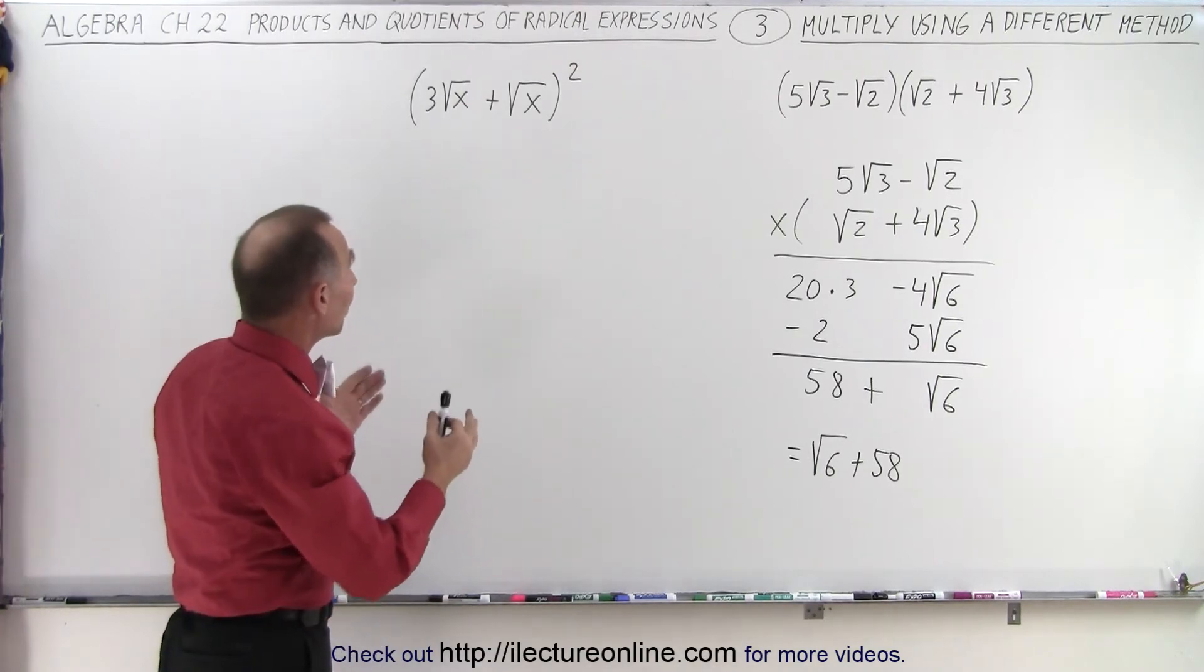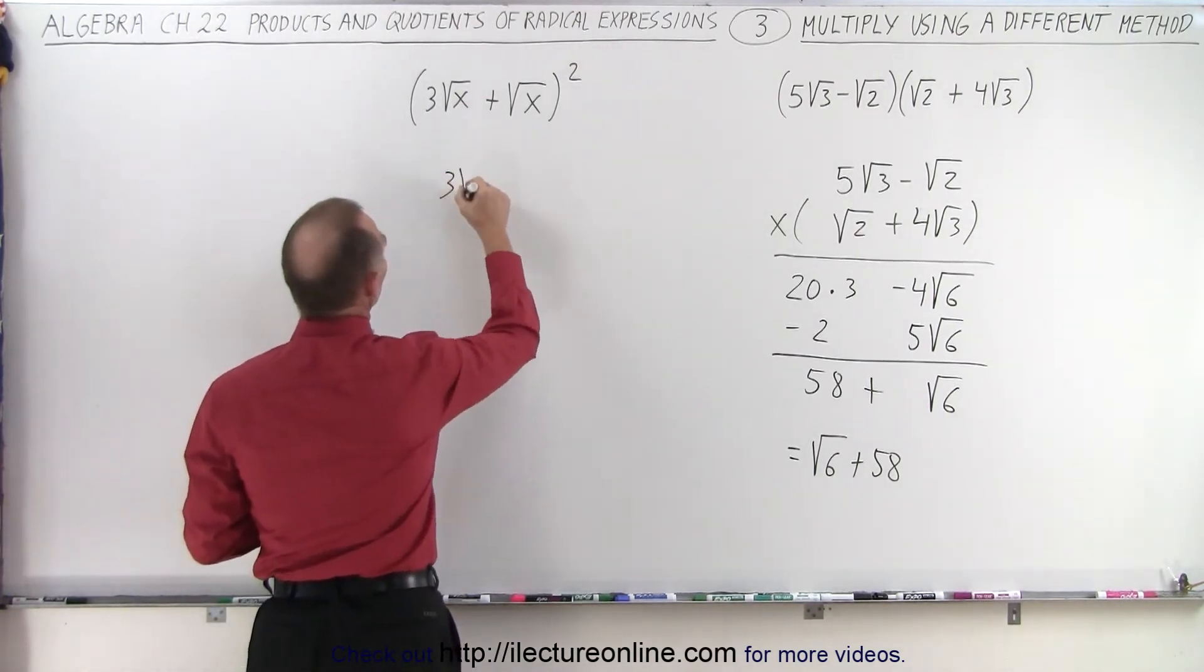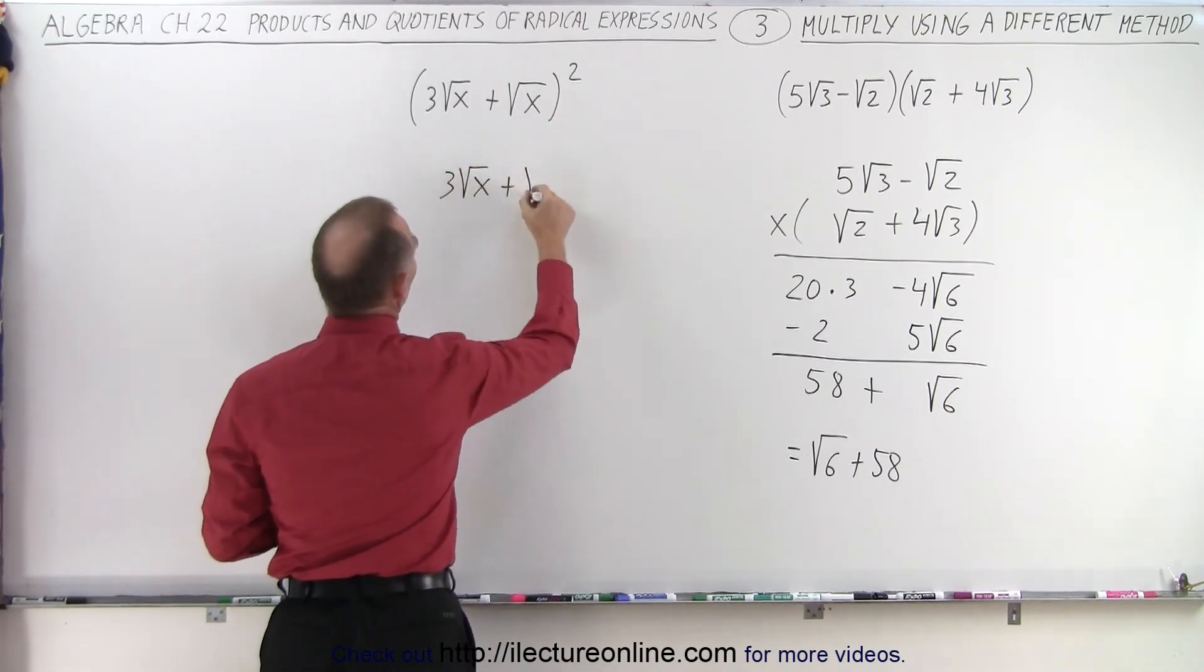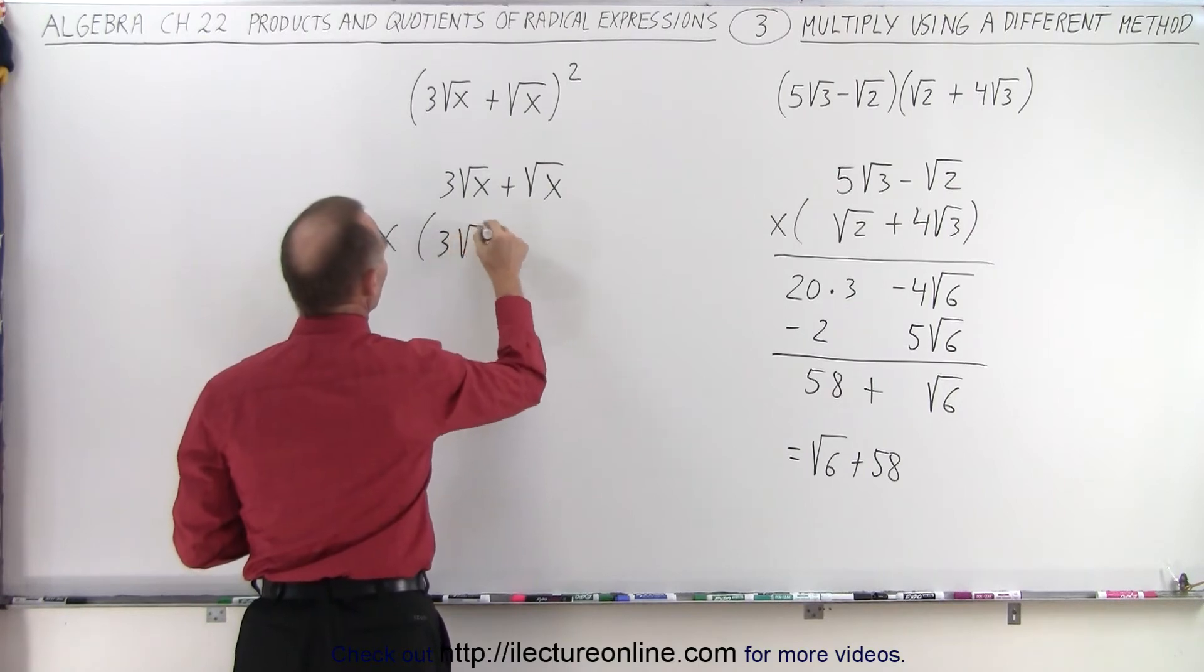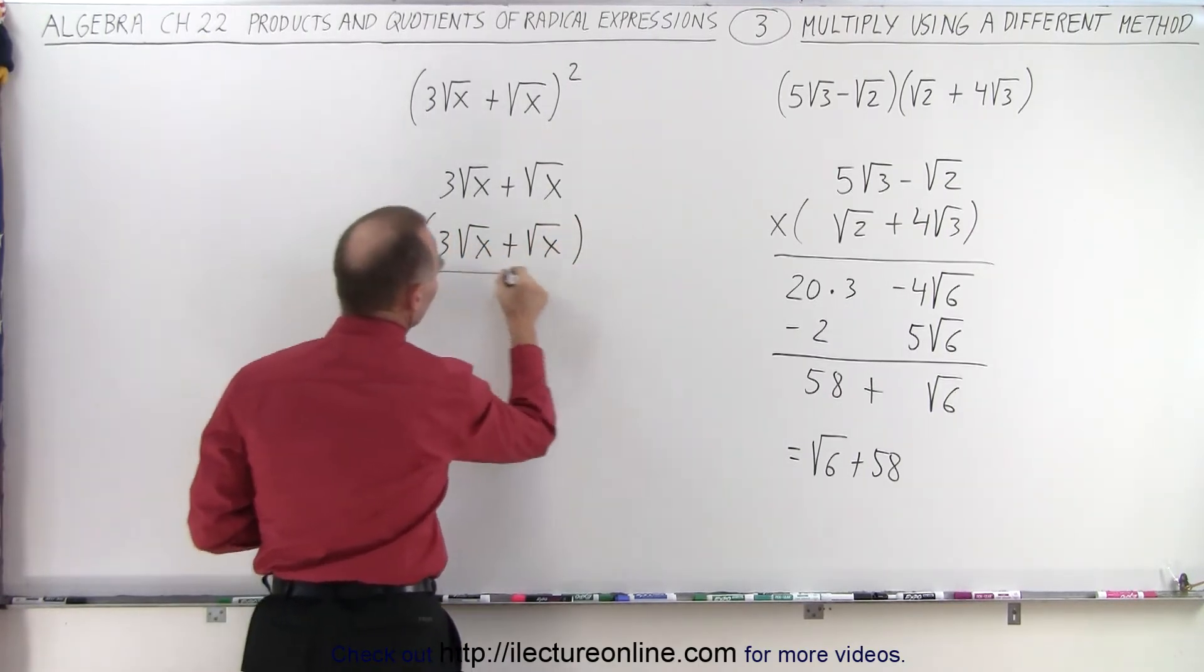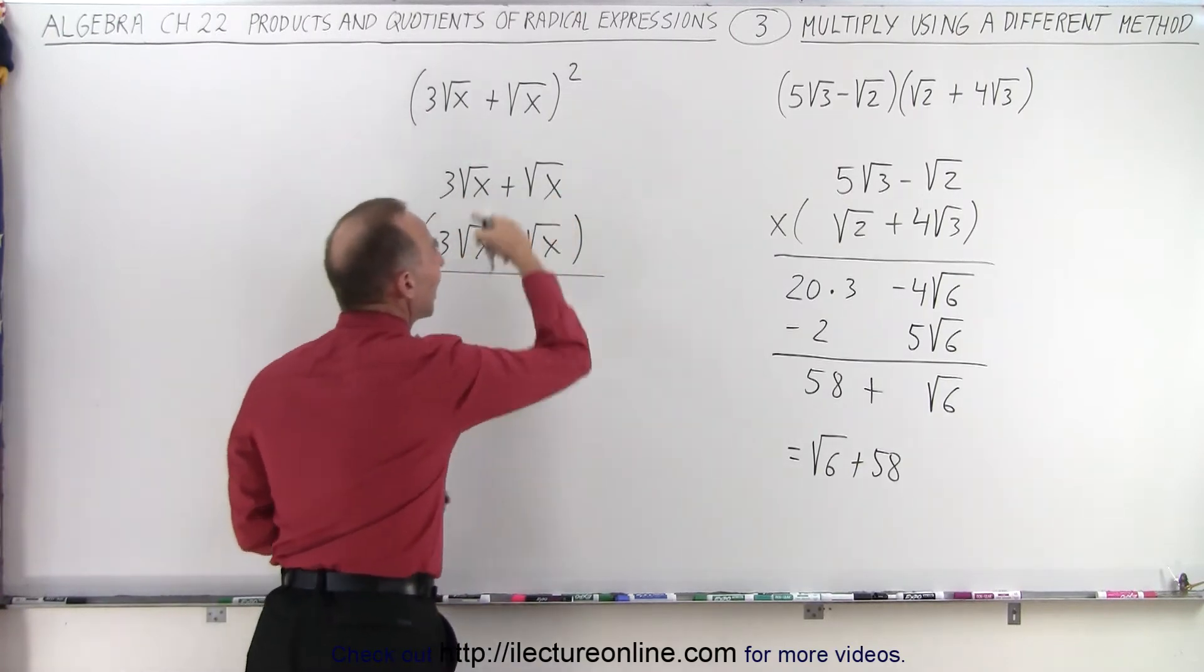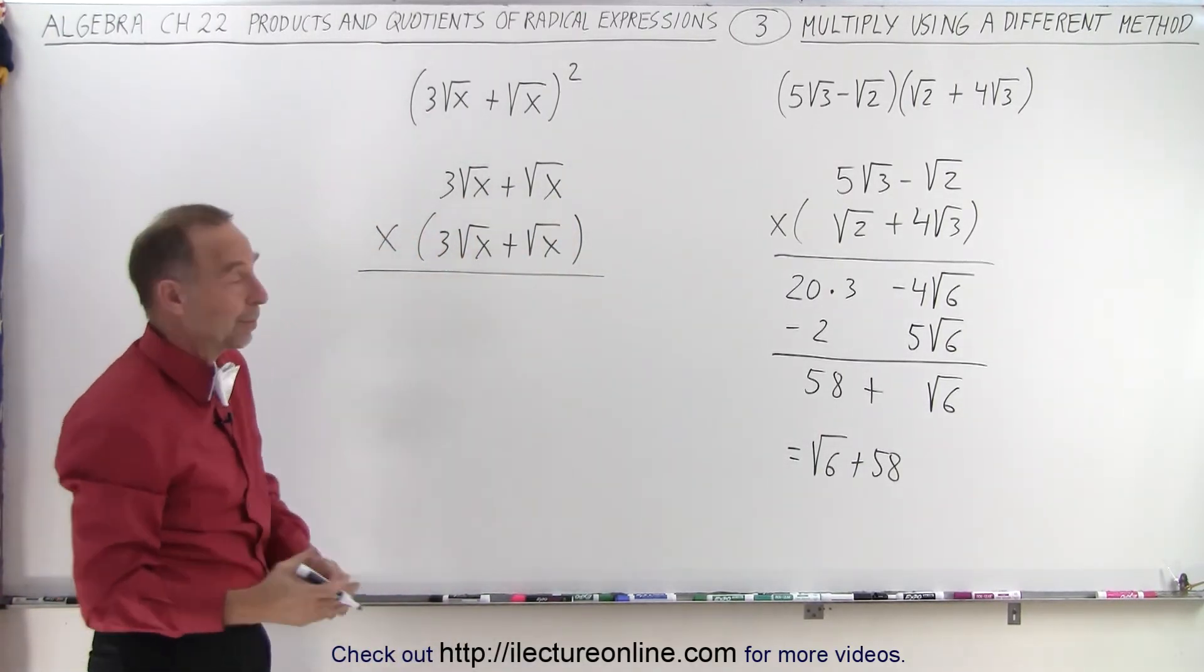Now on the second one, notice we can do it exactly the same way. We can write this as 3 times the square root of x plus the square root of x, and then multiply that times itself: 3 times the square root of x plus the square root of x. This one looks a little different because all of them have exactly the square root of x, and when we multiply, the radical will disappear.